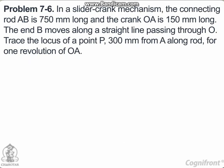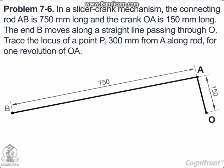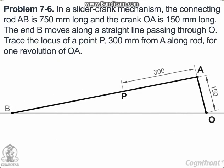Problem 7.6: In a slider crank mechanism, the connecting rod AB is 750 mm long and the crank OA is 150 mm long. The end B moves along a straight line passing through O. Trace the locus of a point P, 300 mm from A along the rod, for one revolution of OA.